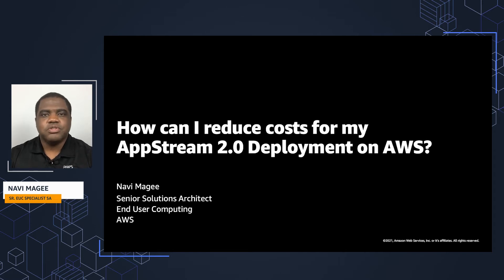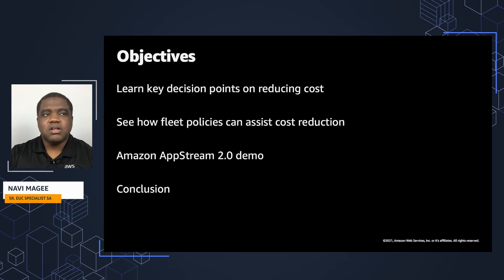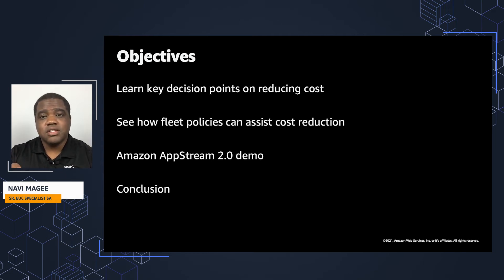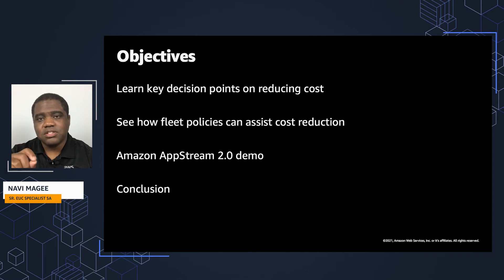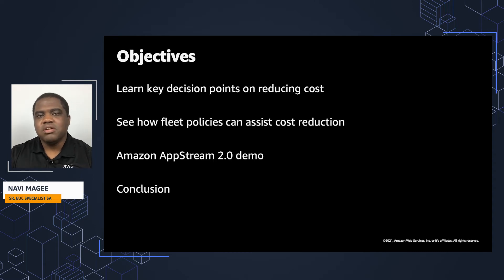Let's take a look at our objectives. We'll learn about key decision points on reducing costs. We'll see how fleet policies can assist with cost reduction. Then we'll see an AppStream demo that will allow us to see certain things we can adjust in order to reduce those costs. And finally, we'll conclude with what's the gist of it — a few things you can take away and implement today to have a cost-effective AppStream solution.